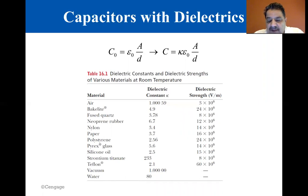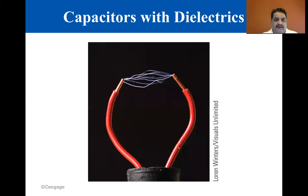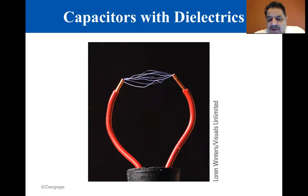Most insulating materials have dielectric strength greater than that of air, as you can see from the table. This photo shows the dielectric breakdown of air. Sparks are produced when a large alternating voltage is applied across the wires by a high voltage capacitor induction coil power supply.